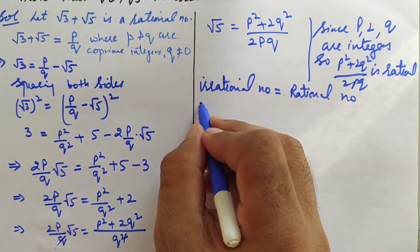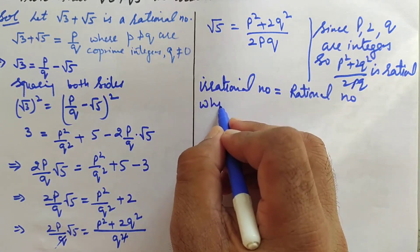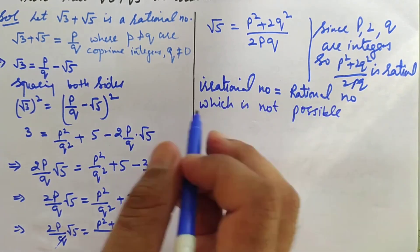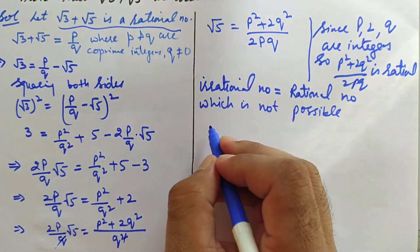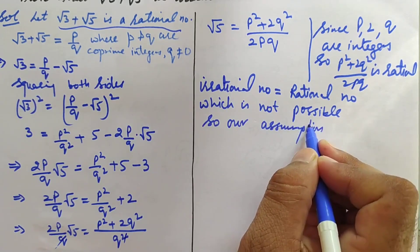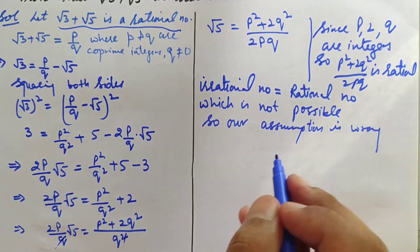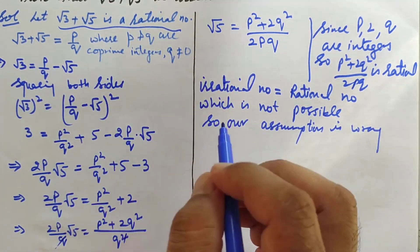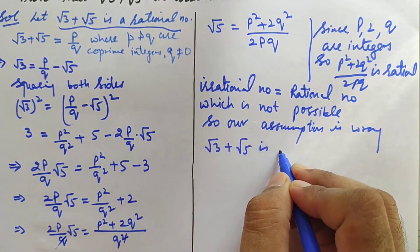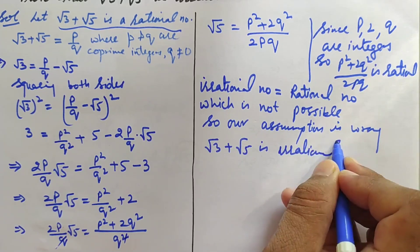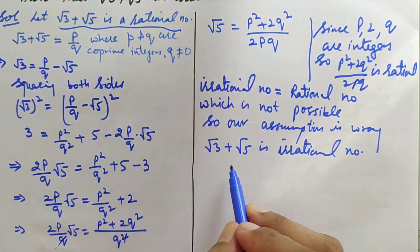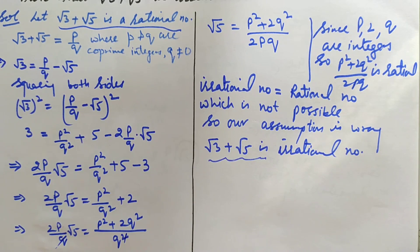Which is not possible. So our assumption is wrong. And you know if it is not a rational number, then it will be an irrational number only. So √3 + √5 is an irrational number, because either a number is rational or it is irrational. If it is not a rational number, then it might be an irrational number. This way we will prove this question. Thanks for watching.